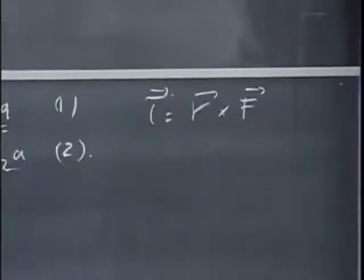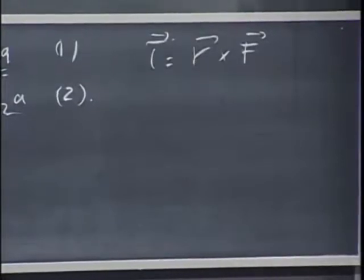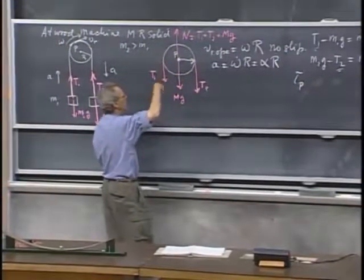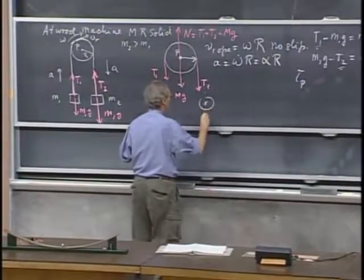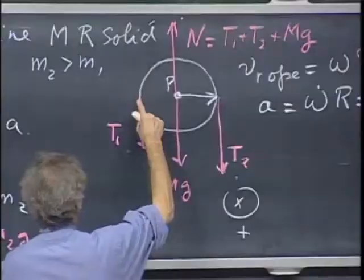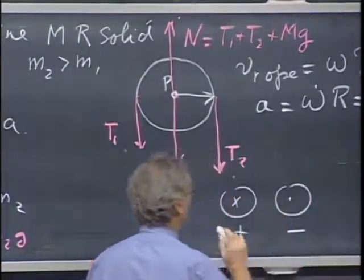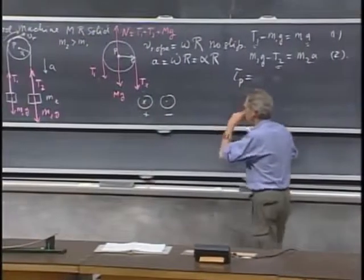The torque relative to point P, the magnitude, is this position vector times this force. That is a torque into the blackboard. What is into the blackboard, I will call positive. The torque due to this force is out of the blackboard, and I will call that negative. Since this angle is 90 degrees, I simply get that the torque relative to point P